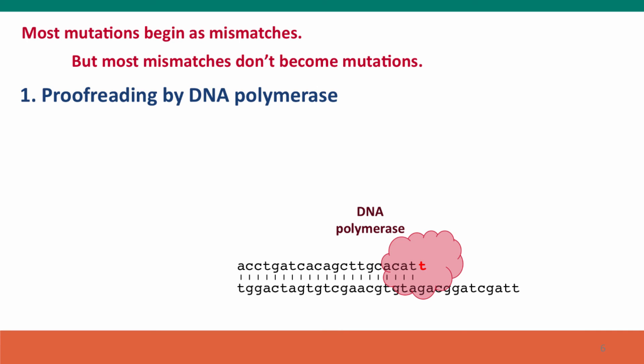Most mutations start out as mismatches, but most mismatches don't become mutations. In fact, less than 1% of mismatches become the kind of mutations I just showed you — and that's because of a function carried by DNA polymerase called proofreading.